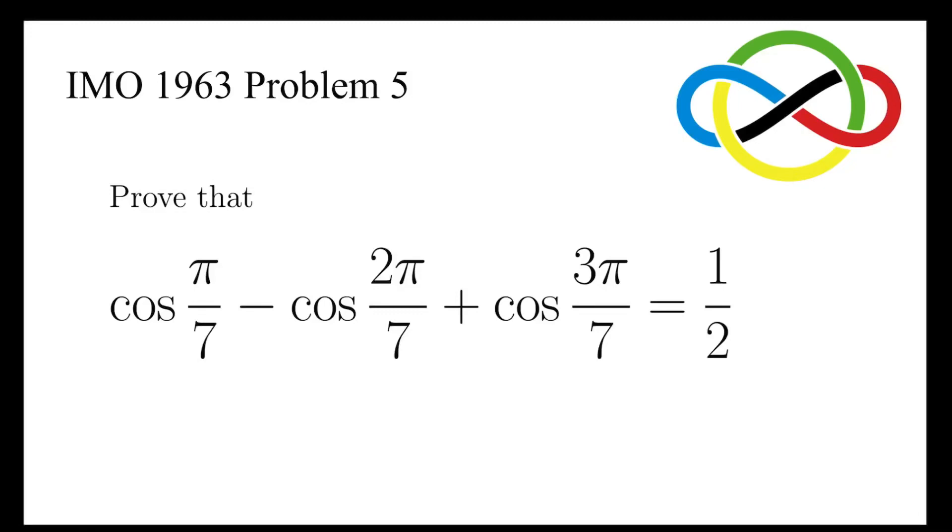In this video, we are going to work on the fifth problem in IMO 1963 to prove that cosine of π over 7 minus cosine of 2π over 7 plus cosine of 3π over 7 is equal to a half.